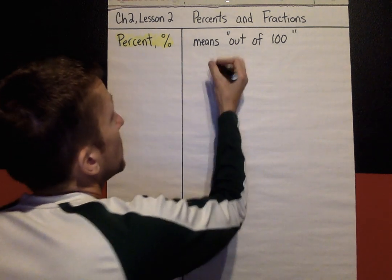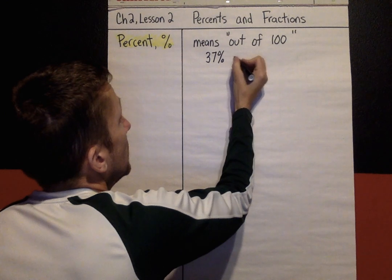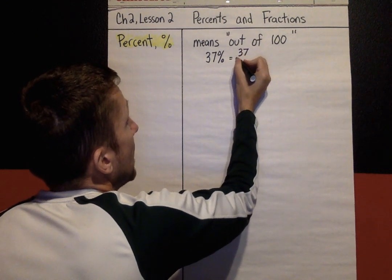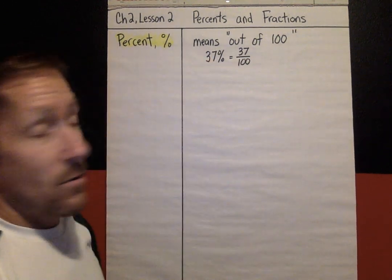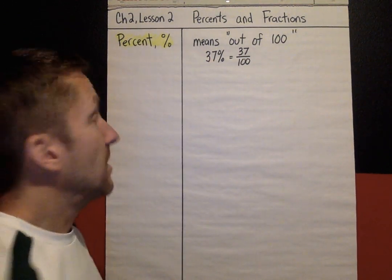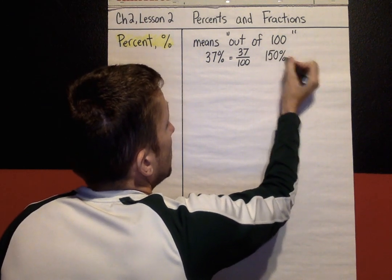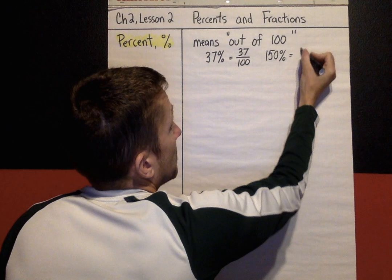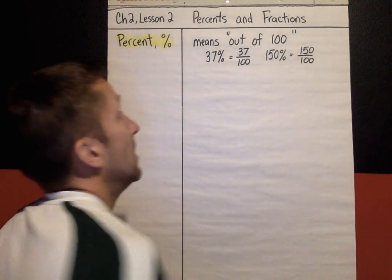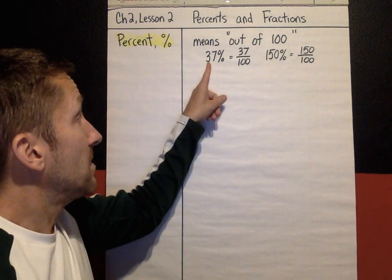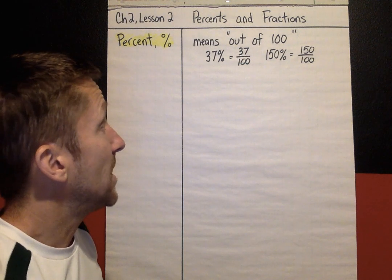Here are a couple of examples. 37% means 37 out of 100. It does not matter what the percent number is. If I have 150%, that still means 150 out of 100. Whatever the number is, you're going to write that number out of 100. That is the meaning of percent, out of a hundred.